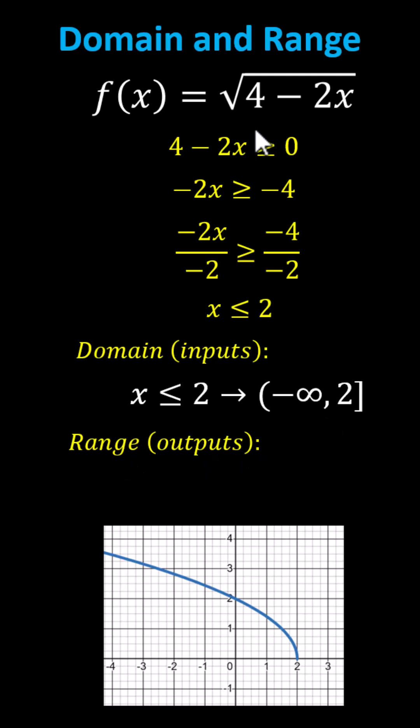Now for the range, or function values. All values of the square root function are greater than or equal to 0, which gives us the range of y greater than or equal to 0. Using interval notation, we have the interval from 0 to infinity, closed on 0 and open on infinity.